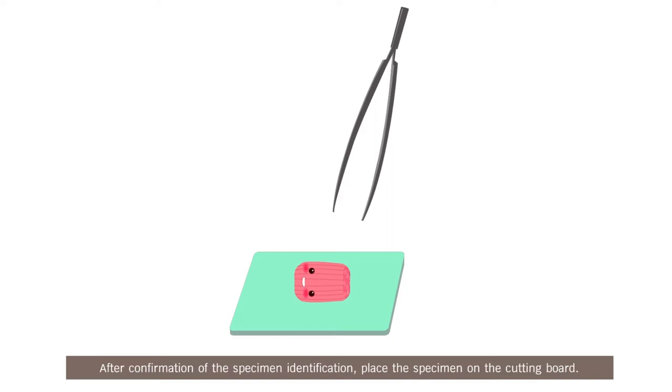After confirmation of the specimen identification, place the specimen on the cutting board. For electron microscopic evaluation, cut the fresh muscle along the muscle fiber with a width approximately 1 mm. The main part will be used for freeze fixation.